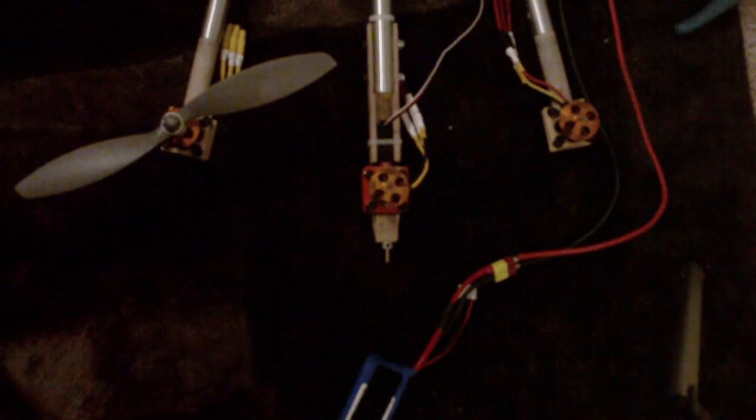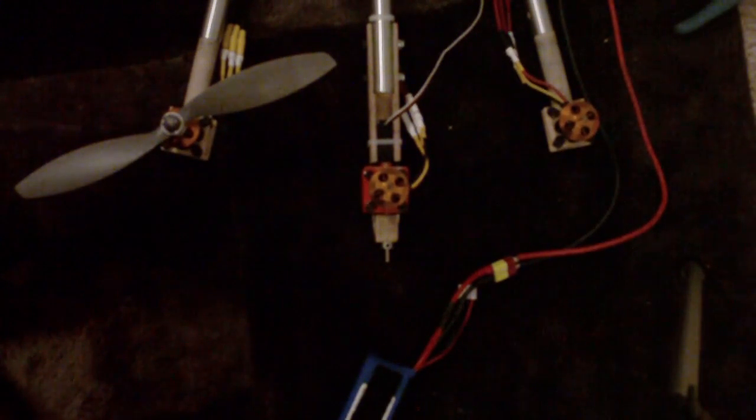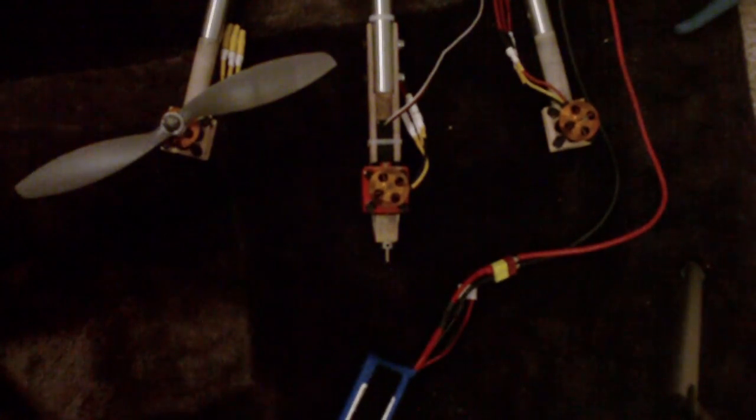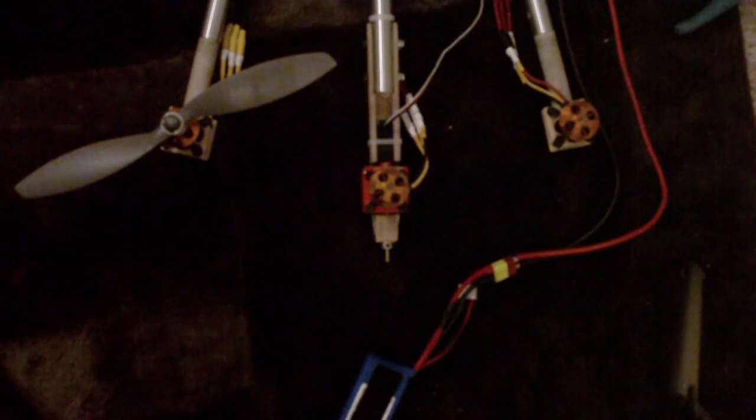So your gyros are going to be plugged into your receiver. Your receiver is going to plug into either a battery eliminator circuit or an external battery. Once your receiver is on and once your gyros have all initialized, then you can go ahead and plug in the main flight pack.